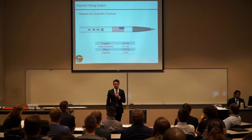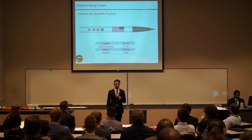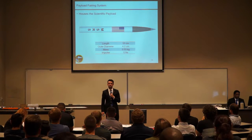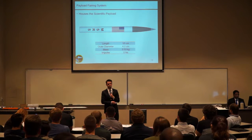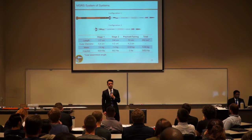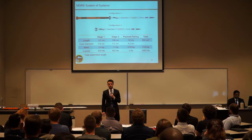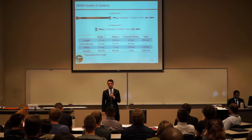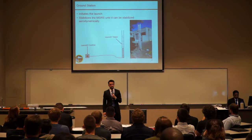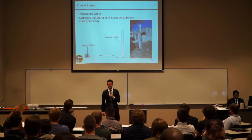The payload fairing system houses the scientific payload and all avionics for tracking altitude. Its length is 53 centimeters, outer diameter 4.2 centimeters, mass about 0.5 kilograms, and this stage has no motor. The total rocket system has two configurations: the launch configuration and the coasting configuration. The total length is approximately 262 centimeters, mass about 5.33 kilograms, and total impulse of about 3,953 Newton-seconds. The ground station initiates the launch and stabilizes the MSRS until it can be aerodynamically stabilized, consisting of a launch control and a launch tower.